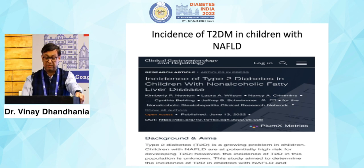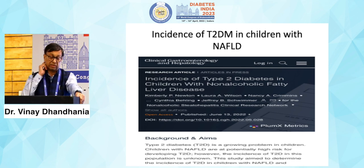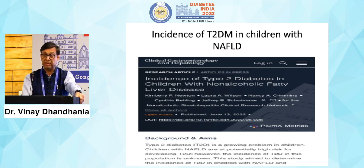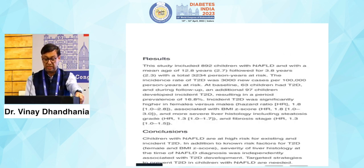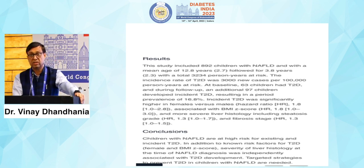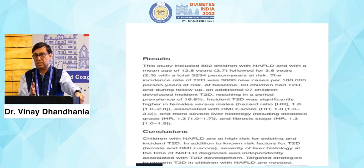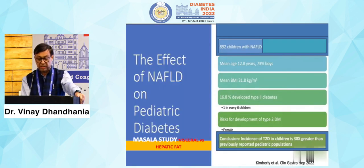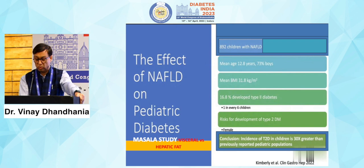We have data even from children — incidence of type 2 diabetes in children with NAFLD was published last year. It is a cause of concern given the rising prevalence of obesity. Children with NAFLD are at higher risk of existing and incident type 2 diabetes, independent of known risk factors. Severity of liver histology at NAFLD diagnosis was independently associated with diabetes risk. Incidence of type 2 diabetes in children with NAFLD is 30 times greater than previously reported in the general population. Even pre-diabetes is very high today in obese children.